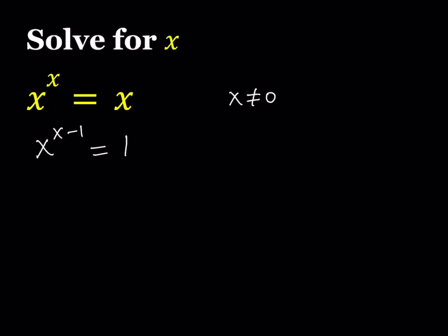And if we do that, we get x to the power x minus 1 equals 1. So this is kind of nice because I have a number on the right-hand side, and there are a couple of ways to obtain 1 if we're dealing with real numbers. For example, if the base is 1, then this is always going to work because any power of 1 is going to be 1. So x equals 1 is a good candidate. It's a solution.